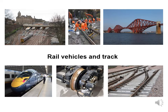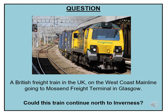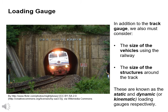Let's now have a look at some of the rail vehicles and the track. The Netherlands has the same track gauge as the UK. Look at this train carefully — could this train, photographed at Amsterdam's Central Station, carry passengers on the British Railway Network? And here is a Freightliner Class 70, a British freight train on the west coast mainline going to Moss End Freight Terminal in Glasgow. Could this train continue north to Inverness? In addition to track gauge, we must also consider the size of the vehicles using the railway and the size of the structures around the track. These are known as the static and dynamic or kinematic loading gauges respectively.